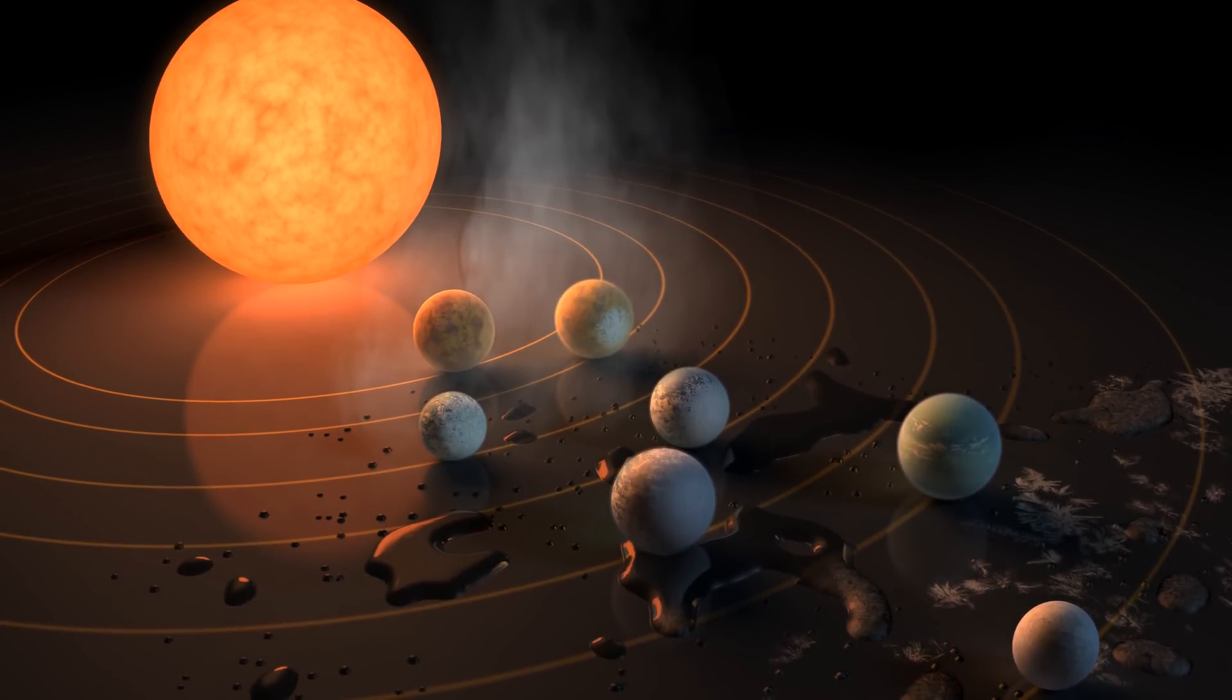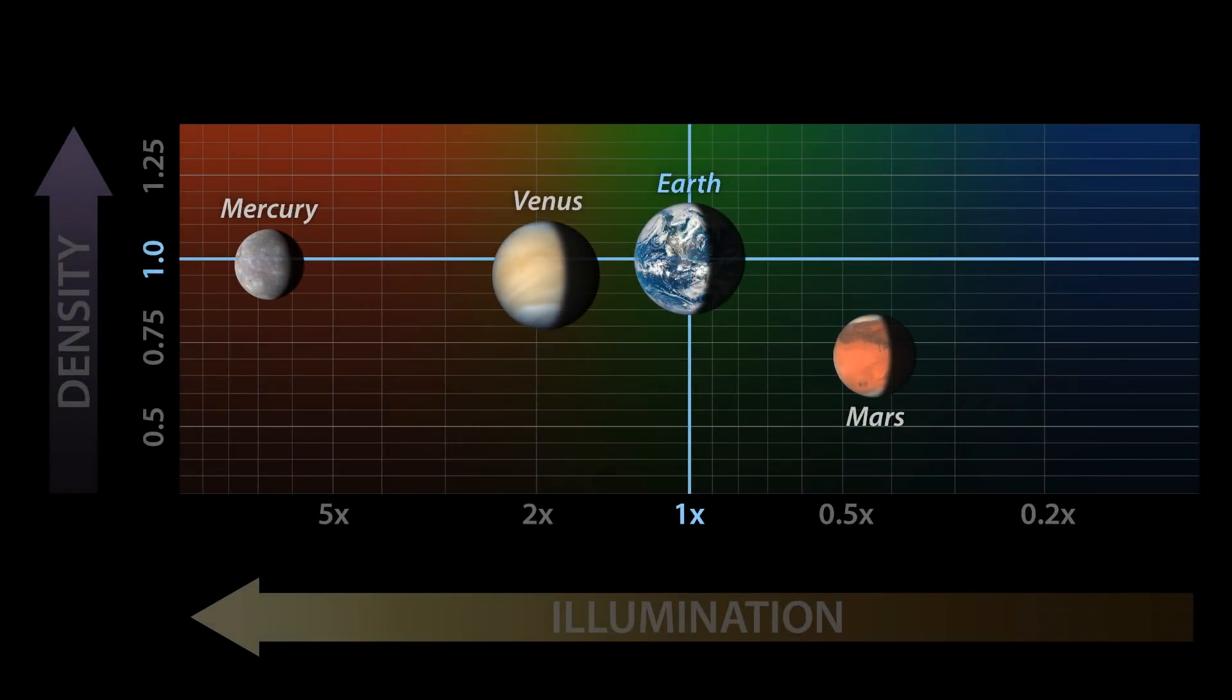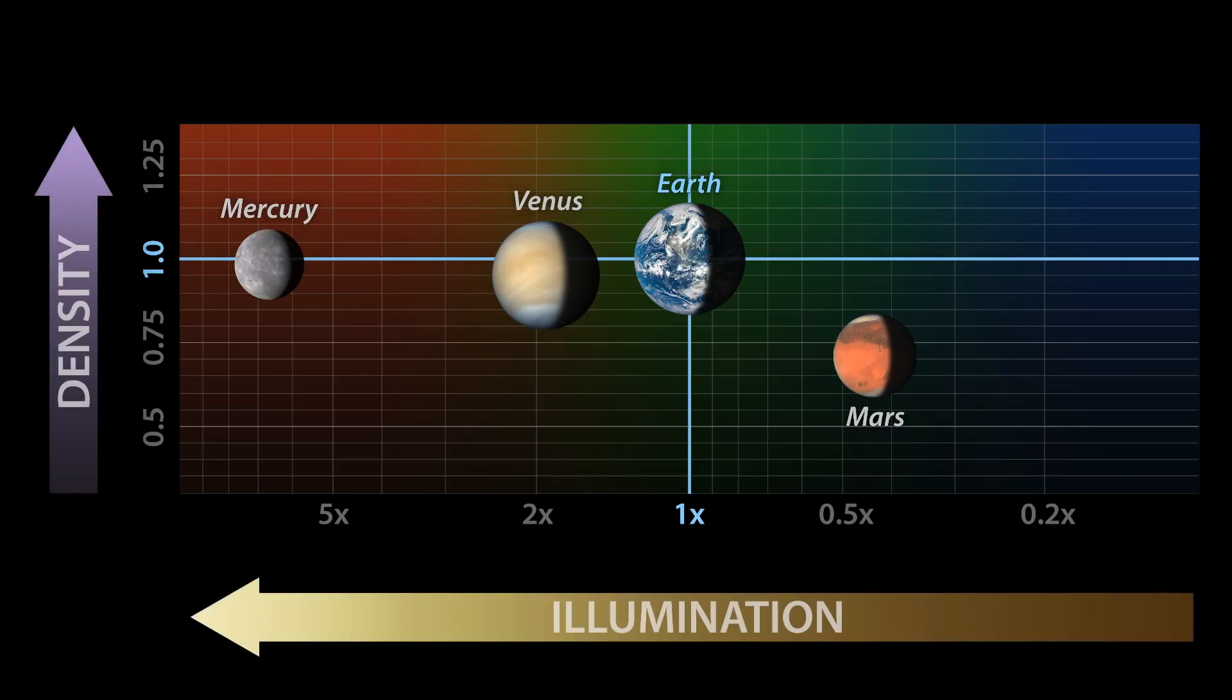So, what does this tell us about the TRAPPIST-1 system? To start, let's see how the rocky planets in our own solar system stack up by size, density, and solar illumination.